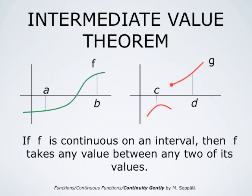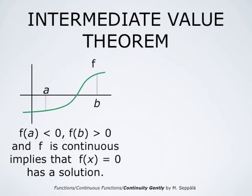Continuous functions have a very important property called the intermediate value theorem. It says that if f is continuous on an interval, then it takes any value between any two of its values. Here we see the graph of a function which is continuous on the interval from a to b. By the intermediate value theorem, we may conclude that the function f takes the value 0 between a and b, because f(a) is negative and f(b) is positive. Therefore, the equation f(x) equals 0 has a solution between a and b.